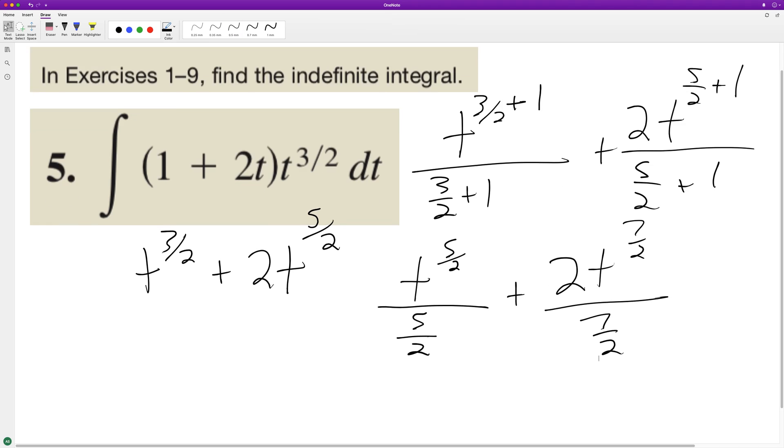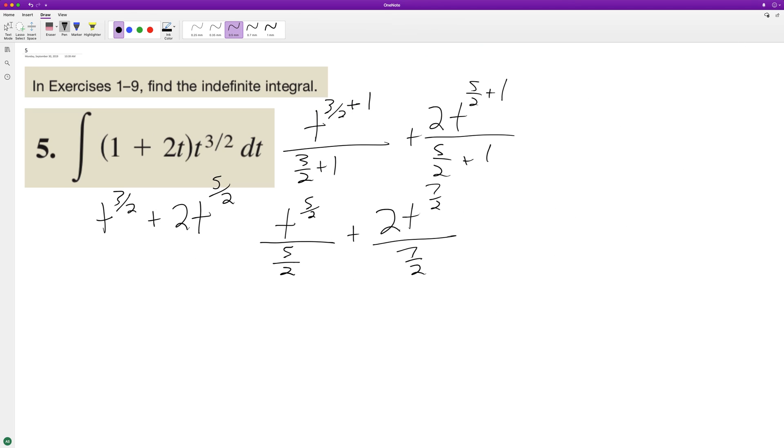All right, so there we go. T raised to the five halves over five because you reciprocate when you divide, plus four t raised to seven halves over seven.